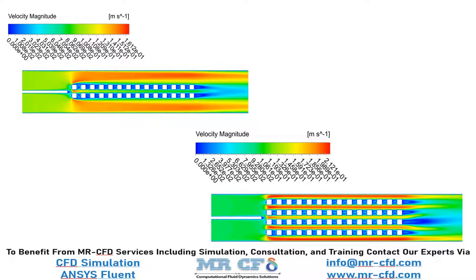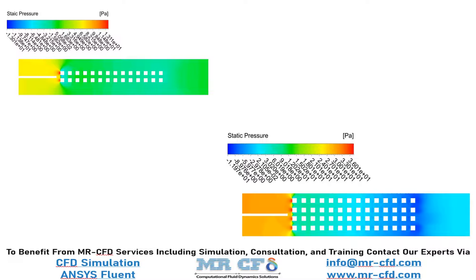Velocity contours also show that the average speed value is larger for the second case. Since pressure and velocity are inversely related from the Bernoulli equation, it makes perfect sense for the mean pressure number to be more negative in the second case.